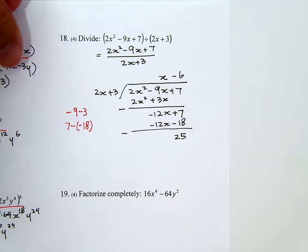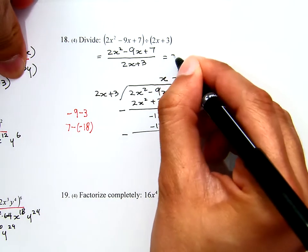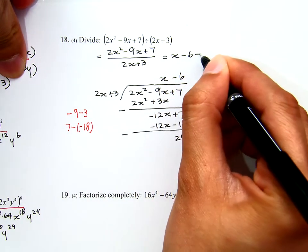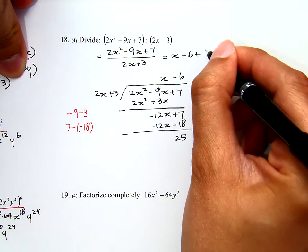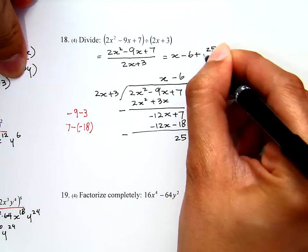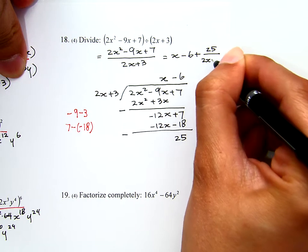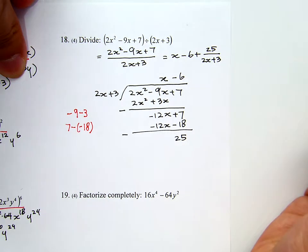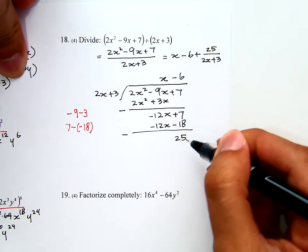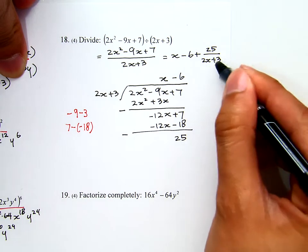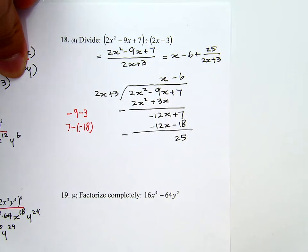Now, the final answer here will be x minus 6 plus 25 over 2x plus 3. That's the quotient. The 25 comes from the remainder. The 2x plus 3 comes from the divisor.